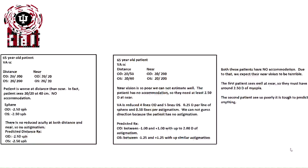Let's look at a patient without accommodation. At distance, the first patient on the left sees 20/200 in right eye and left eye and 20/20 at near. The patient is worse at distance than near. In fact, the patient sees 20/20 at 40 centimeters and they have no accommodation. So what does this tell us our sphere power is?